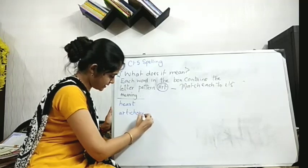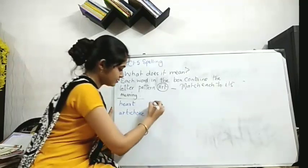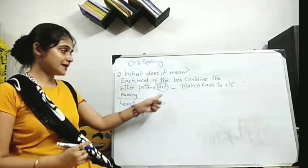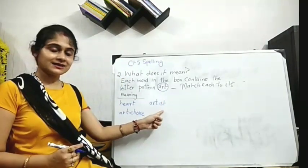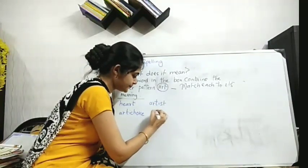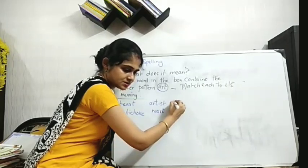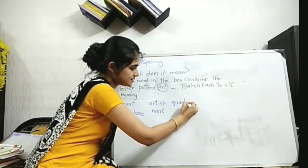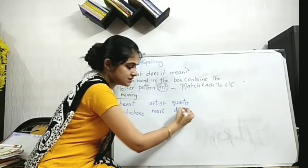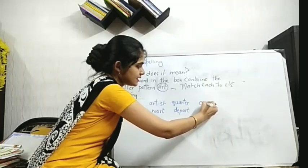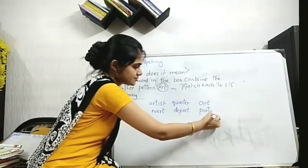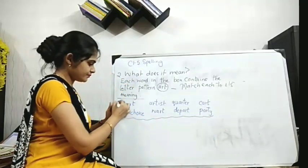You have to find out with this A-R-T. So: A-R-T-I-C-H-O-K-E-R-T is artichoke art, A-R-T-I-S-T is artist, W-A-R-T is wart, Q-U-A-R-T-E-R is quarter, D-E-P-A-R-T is depart, C-A-R-T is cart, P-A-R-T-Y is party. So this is your box, done.